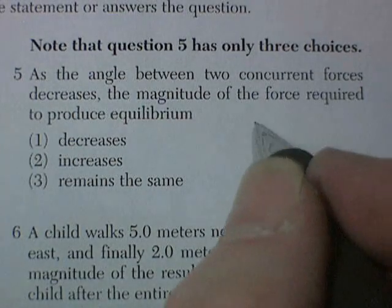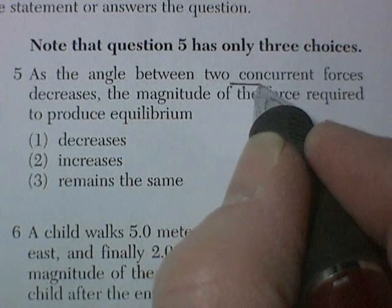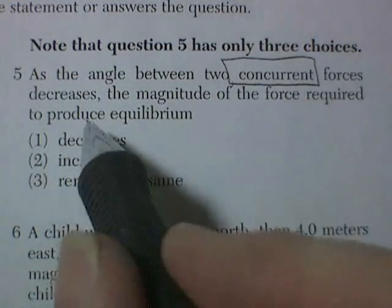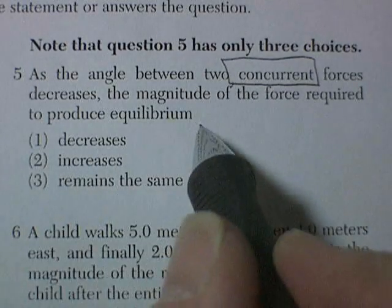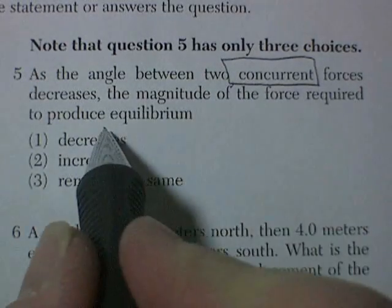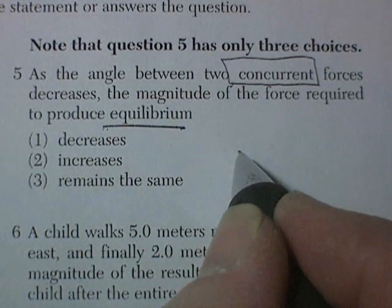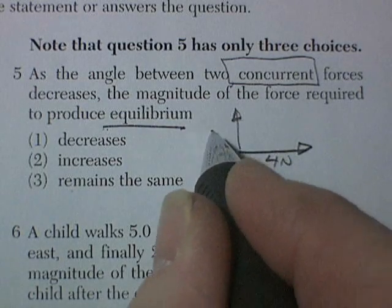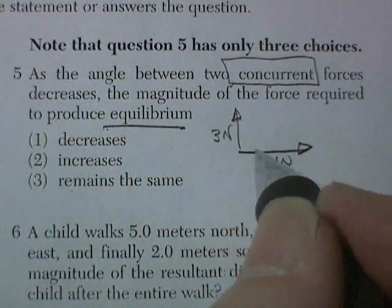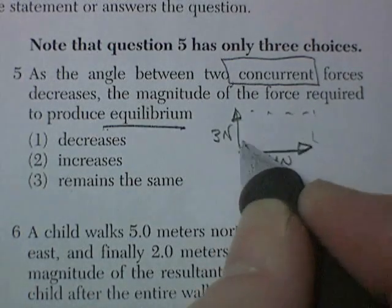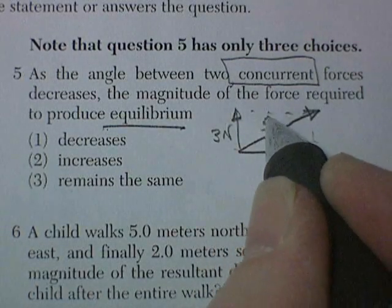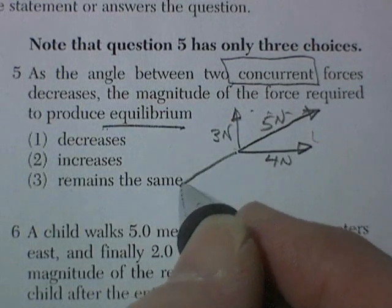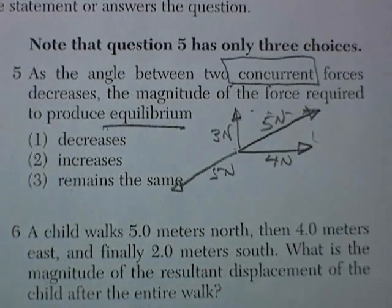Question 5: the angle between two concurrent forces — concurrent meaning they act on the same object. As the angle between the two forces decreases, what happens to the magnitude of the force required to produce equilibrium? Let's pick 4 newtons and 3 newtons at 90 degrees — that gives a resultant of 5 newtons, so it requires 5 newtons to keep it in equilibrium.